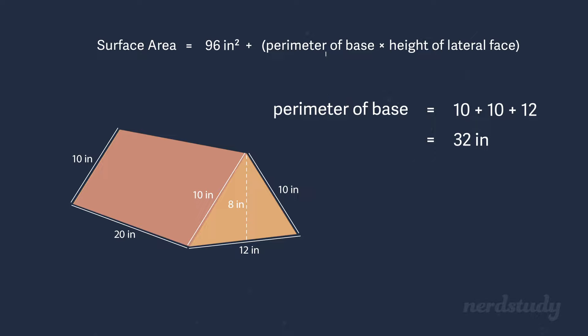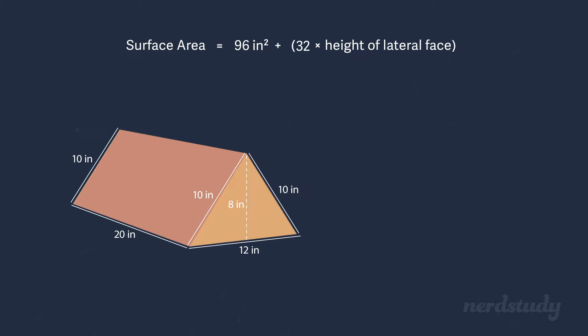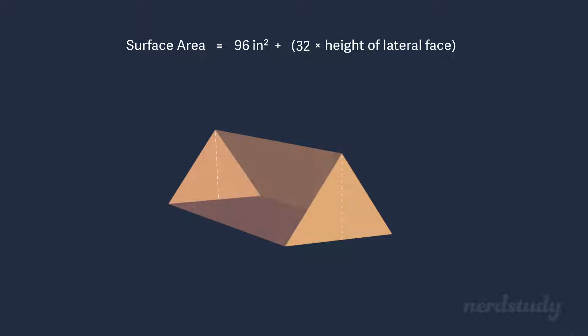All we need to do now is to multiply this to the height of the lateral face. Notice how I said the height of the lateral face and not the height of the triangular base. The height of the triangle, or shall I say the base, was used to find the area of the two triangles that cover both ends of the prism. But the area of the rest of the sides will be determined by the perimeter of the triangular base multiplied by the height of the lateral face itself.